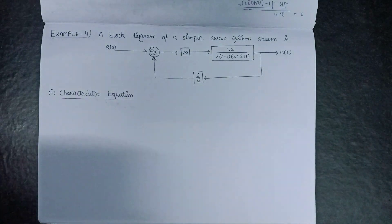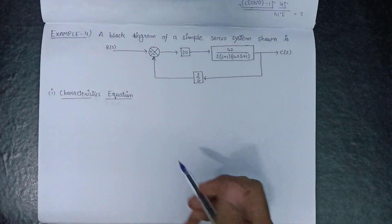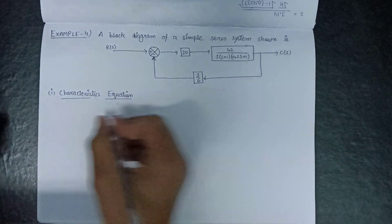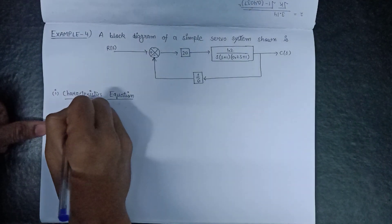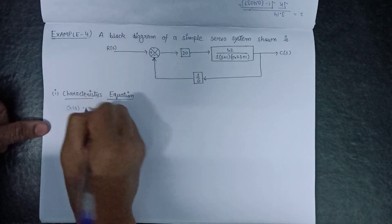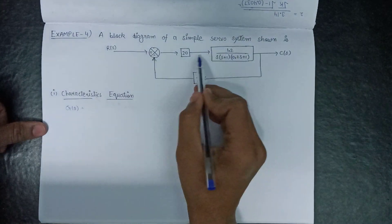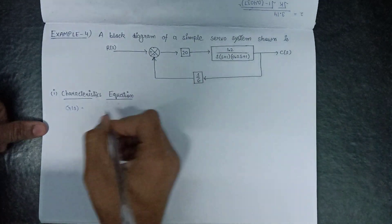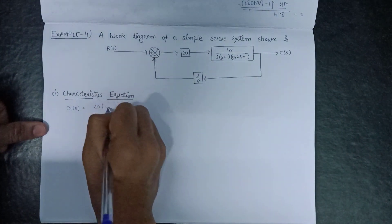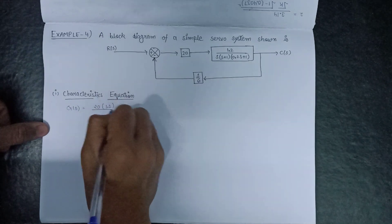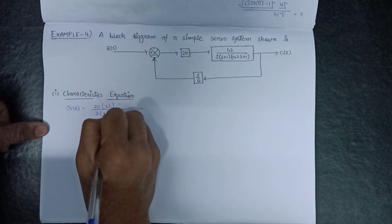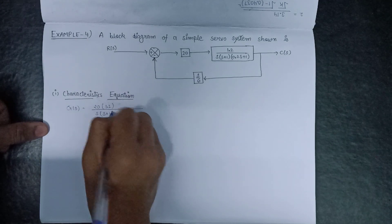Firstly, we have to find out the open-loop transfer function, that is G. Here G is equal to the multiplication of these two blocks, so G will be equal to 20 multiplied by 1.2, divided by s(s+1).